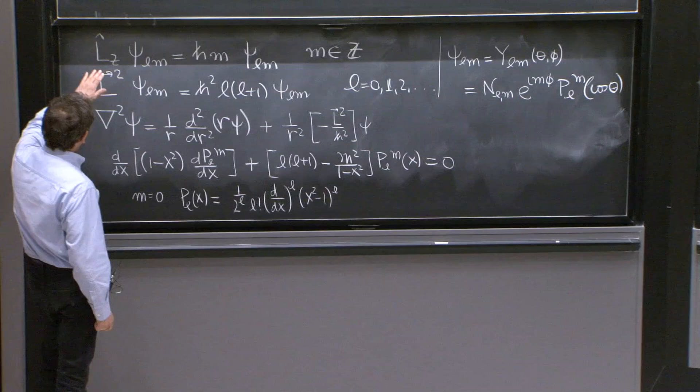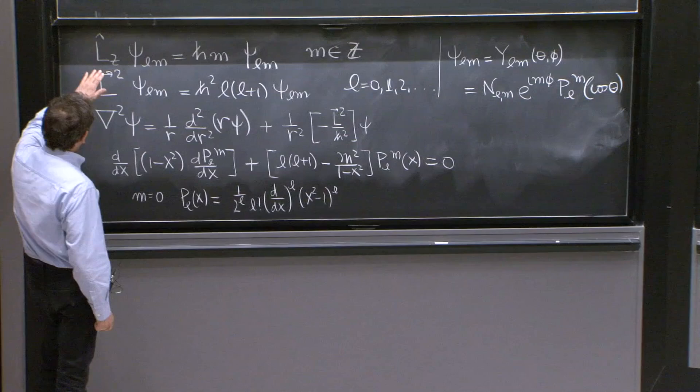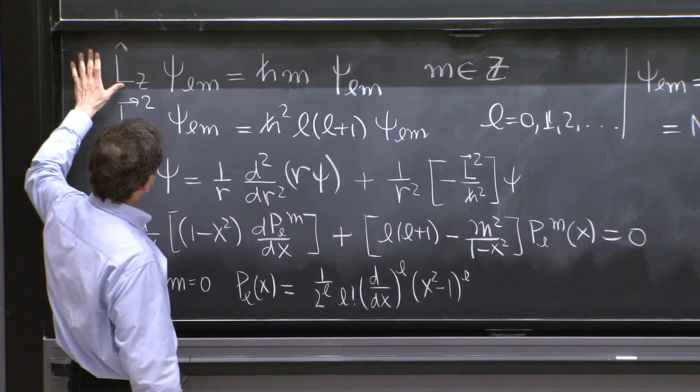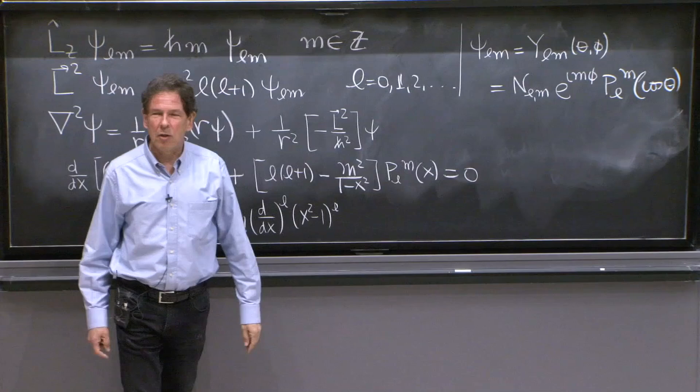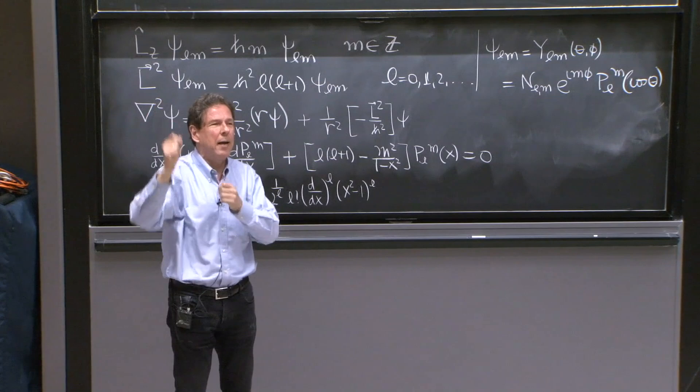Lz being proportional to angular momentum is h bar m. We figured out, by looking at this differential equation, that if we wanted single-valued wave functions, wave functions would be the same at phi and at phi plus 2 pi, which is the same point, you must choose m to be an integer.